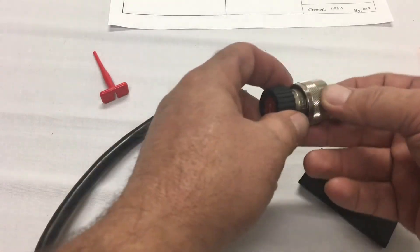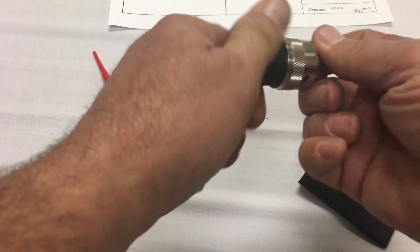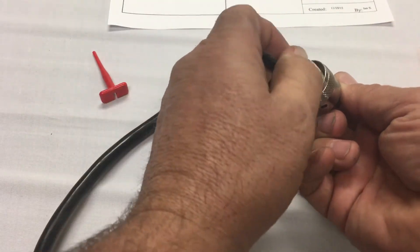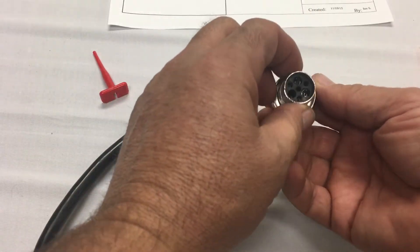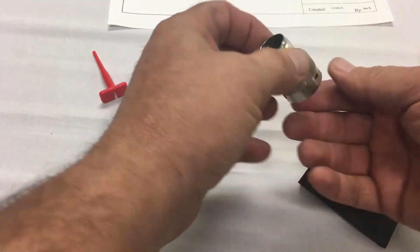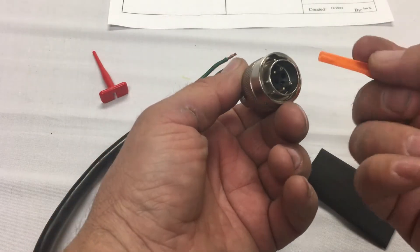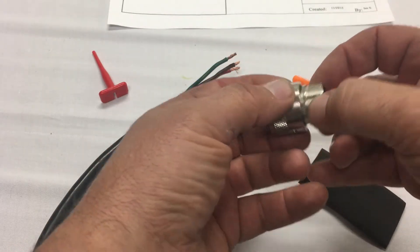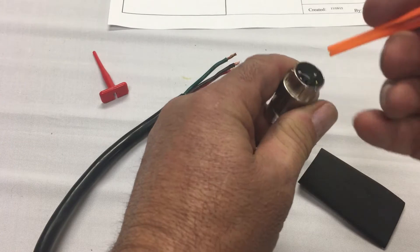First thing you want to do is just unscrew the back collar. Take the little rubber dam off here. You can see there's remnants of the pin inside here. We source these very inexpensive little tools here, but they are a one-time use tool.